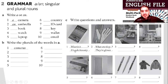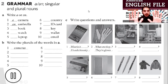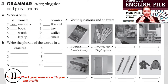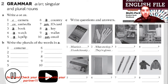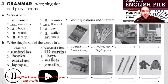Write questions and answers. For example: 'What is it? It's a dictionary.' Or: 'What are they? They're gloves.' Stop the video, do it, and check with your partner. Play the video. A book, a watch, a laptop, a country, an ID card, a key, a wallet, an email. Now the plurals: cameras, umbrellas, books, watches, laptops, countries, ID cards, keys, wallets, emails.